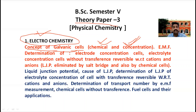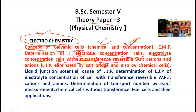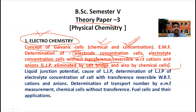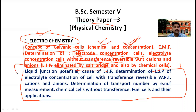In semester 3, concentration cells without transference is given as a topic. But that is a broad topic. In semester 5, there are electrode concentration cells and electrolyte concentration cells without transference — two types. These two topics have to be covered in semester 3 also, but in semester 5 we study in even more detail with more examples. Semester 5 also covers reversible electrodes with respect to cations and anions, and LJP eliminated by salt bridge.